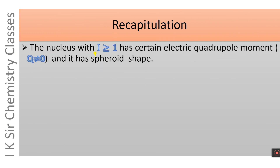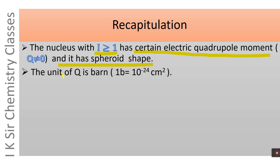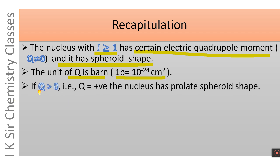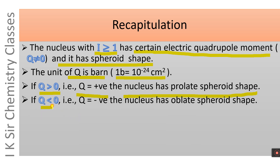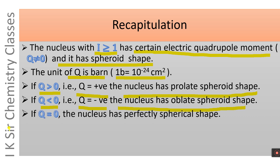A nucleus having nuclear spin equal to or greater than 1 has a certain electric quadrupole moment — that is, its Q is not equal to zero, and it has a spheroid shape rather than a spherical shape. The unit of electric quadrupole moment is barn, and one barn is equal to 10 to the power minus 24 cm². If Q is greater than zero, the nucleus has a prolate spheroid shape. If Q is less than zero, the nucleus has an oblate spheroid shape. If Q is equal to zero, the nucleus has a perfectly spherical shape.